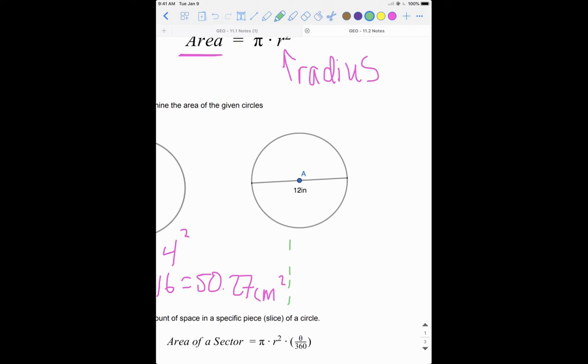r equals 12 divided by 2, which gets us the radius of 6. We want to find area equals pi times radius squared. We get area equals pi times 36.